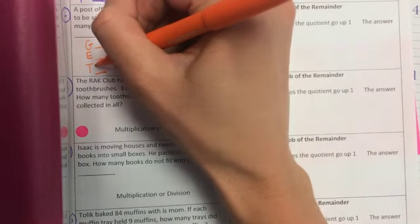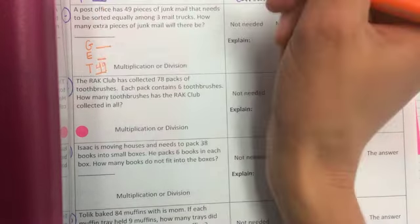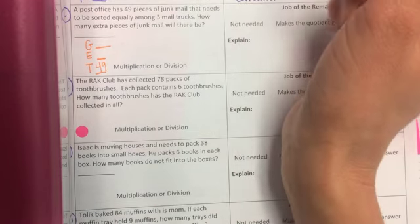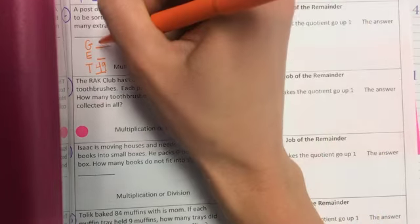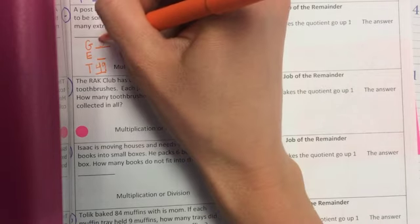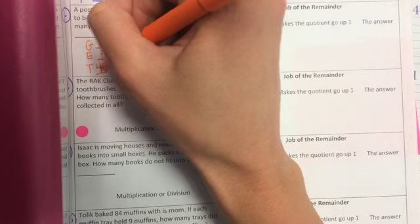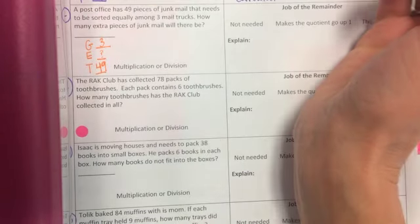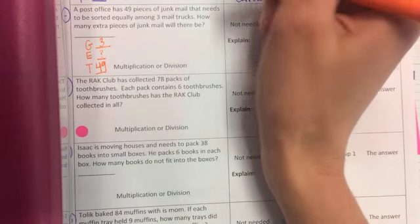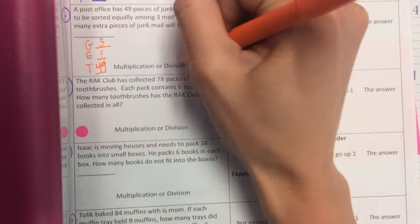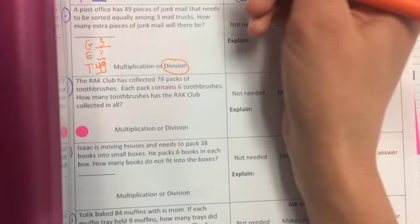So 49 is our total number of pieces of mail that we have. Total pieces of mail. And three mail trucks is actually going to be our groups because that's how they're sorted. We do not know our each number, so we have to figure that out. So because we have our total, we actually know we need a smaller answer, which means we're going to divide.